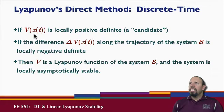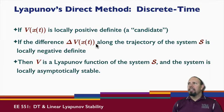And so if V is locally positive definite, that is, it is a candidate, and if the difference along the trajectory of the system S is locally negative definite, then V is a Lyapunov function for the system S, and the system is locally asymptotically stable.